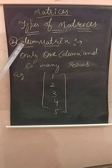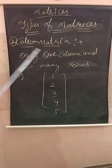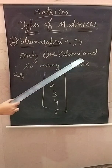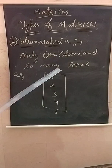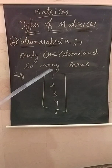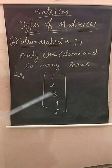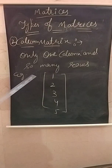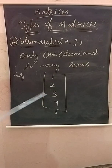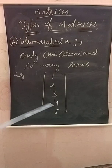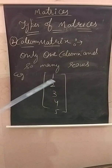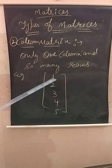The next type is the column matrix. In a column matrix there is only one column and so many rows — row one, row two, row three, row four, row five. We can also introduce additional rows.